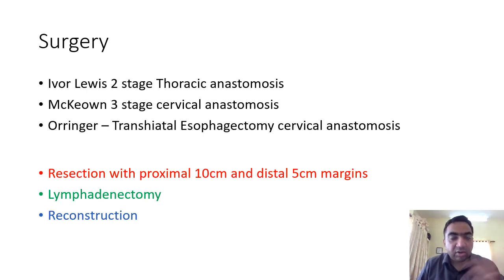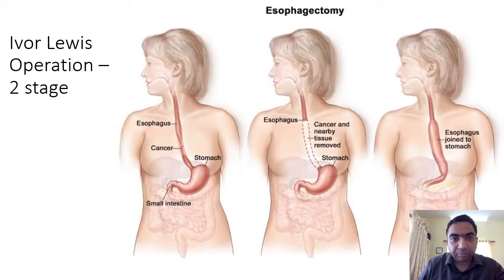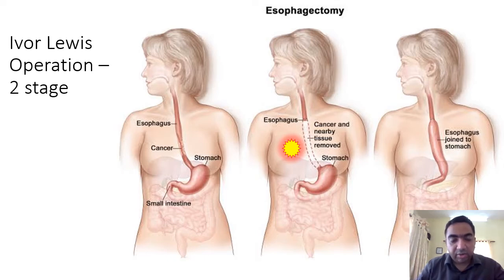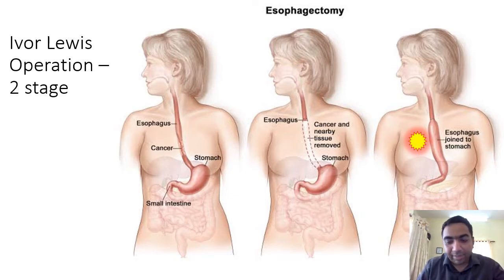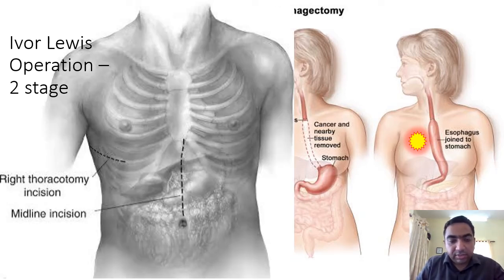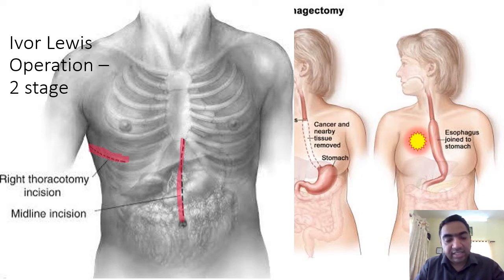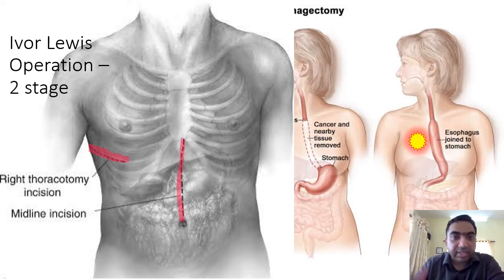In the Ivor Lewis operation there are two steps: an abdominal incision to fashion the stomach into a tube, and a thoracotomy incision to dissect the esophagus, remove the tumor with surrounding lymph nodes, then pull the stomach tube into the thorax and anastomose to the esophagus. The anastomosis is in the thorax. The problem is that any anastomotic leak causes mediastinitis, pleural effusion, and pneumonia — a thoracic leak is difficult to manage.